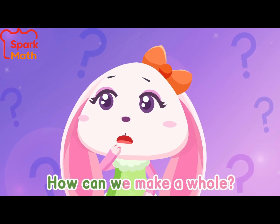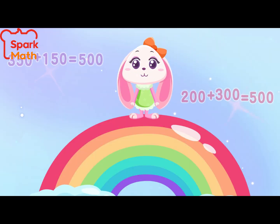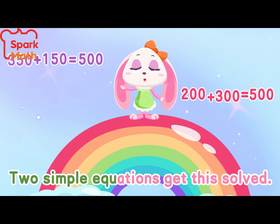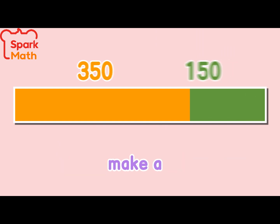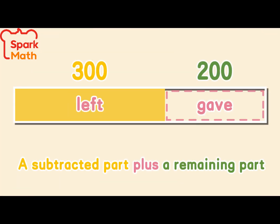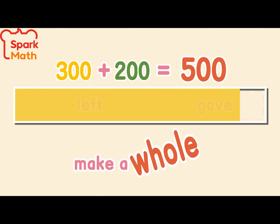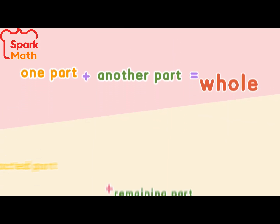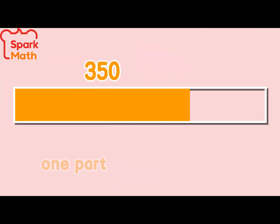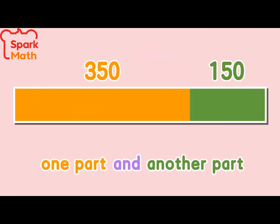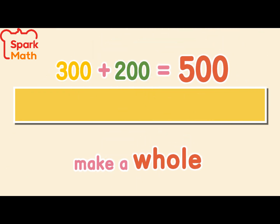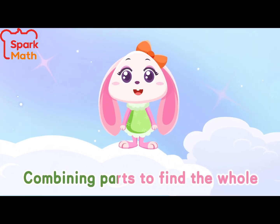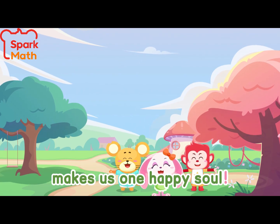How can we make a whole? Two simple equations can be solved. One part and another part make a whole. A subtracted part plus 3 midi part make a whole. Combining parts to find the whole makes us one happy soul.